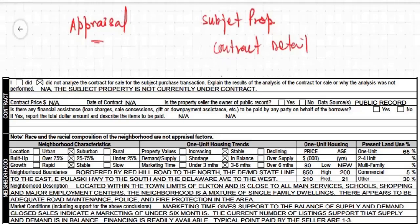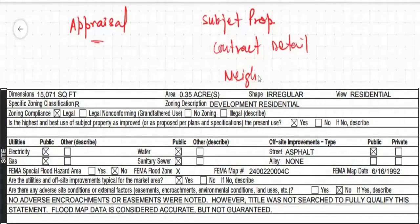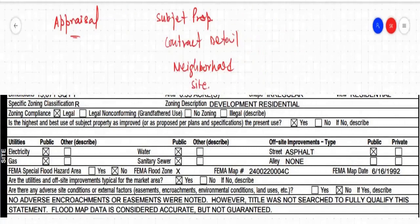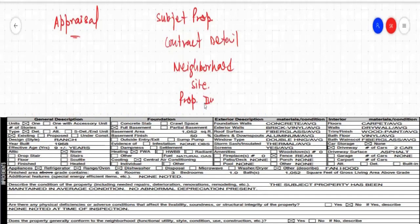Then what is the neighborhood? And then it will go to the site. From there, the property improvements — subject property improvements. These are the different sections that the appraisal will cover.